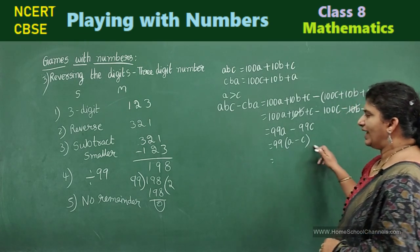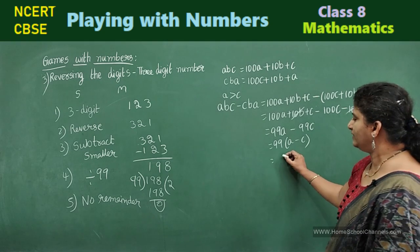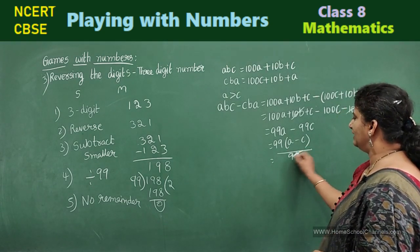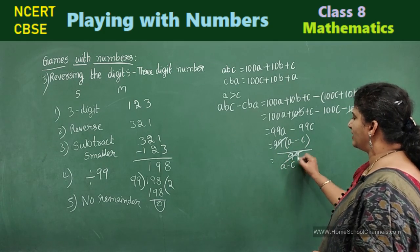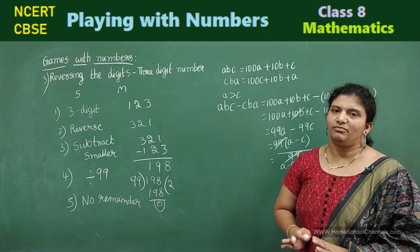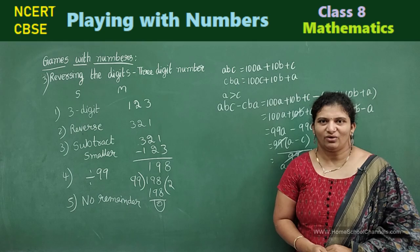Now, this value. What do you want? When you subtract this value, divide it with 99. Divide this with 99. Left with A minus C. This is only the quotient. But this is not the remainder. So, what is the remainder? Remainder will be 0.